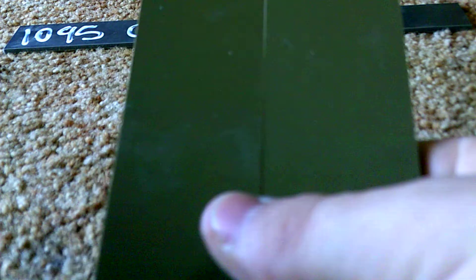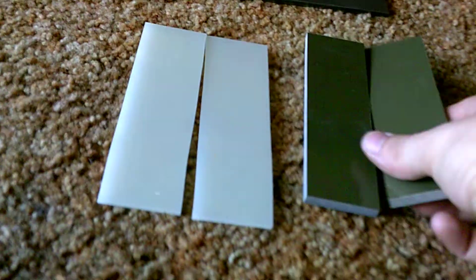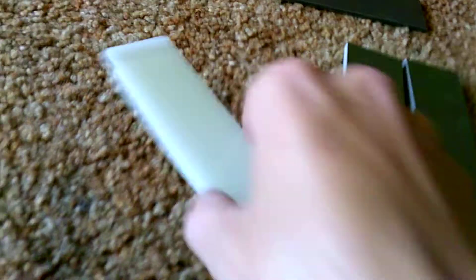You got your OD green scales - it's kind of hard to tell in this light - OD green scales, and these are going to be your liners.